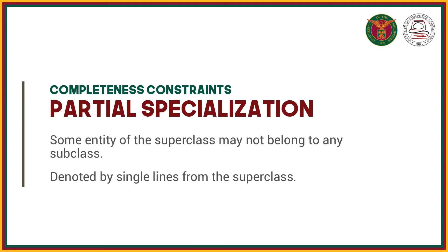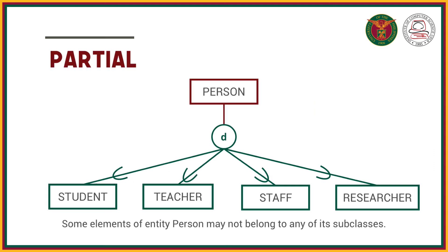For example, person — this is also disjoint. A person can be a student, teacher, staff, or researcher, or they may have no classification at all. That is what partial means — not all records of entity person are required to have a subtype.